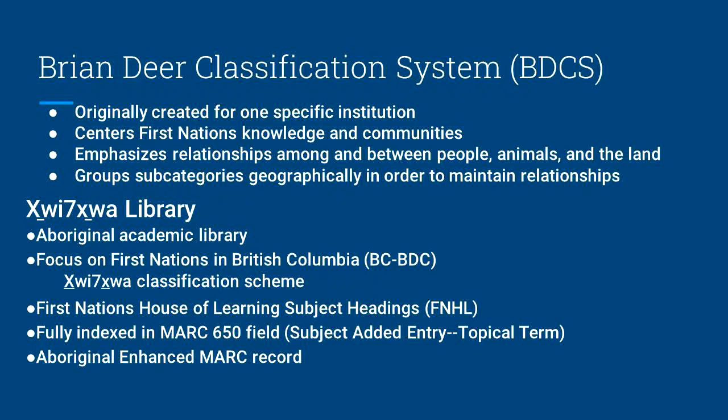An example of an Indigenous KOS is the Brian Deere classification system. Though it is called a system, BDC is more of a subject-based classification framework or foundation that institutions adapt for their collections. The BDC centers First Nations knowledge, terminology, and communities. It emphasizes relationships between and among people, animals, and the land. The BDC was originally developed in 1974 by Kahnawake librarian Brian Deere when he catalogued a research collection for the National Indian Brotherhood, which is now known as the Assembly of First Nations. Deere then went on to adapt this classification scheme for each collection he worked on.